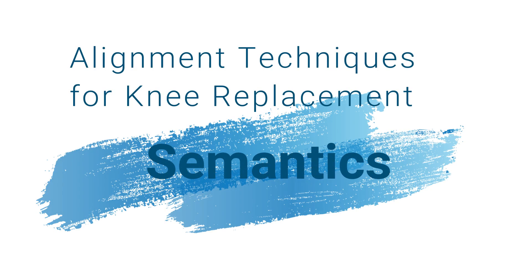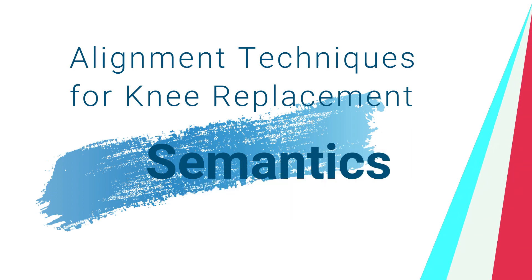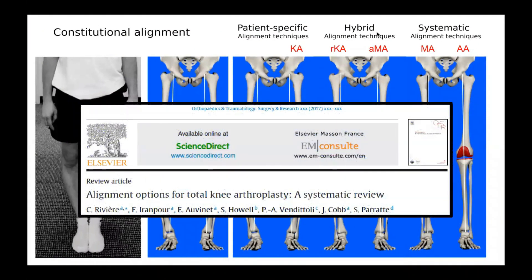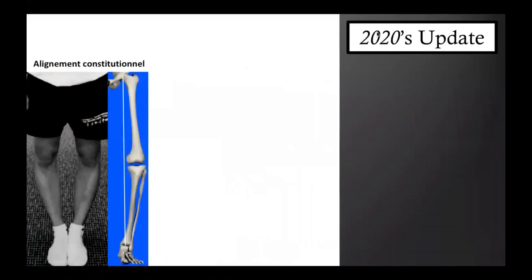Today we are going to talk about semantics. I would like to explain the rationale for the name of each alignment technique for knee replacement. Years ago we published a classification of the various techniques to align TKA. This year we are going to release an update because our understanding of alignment techniques has improved and also because there is a new surgical technique which has been devised recently.